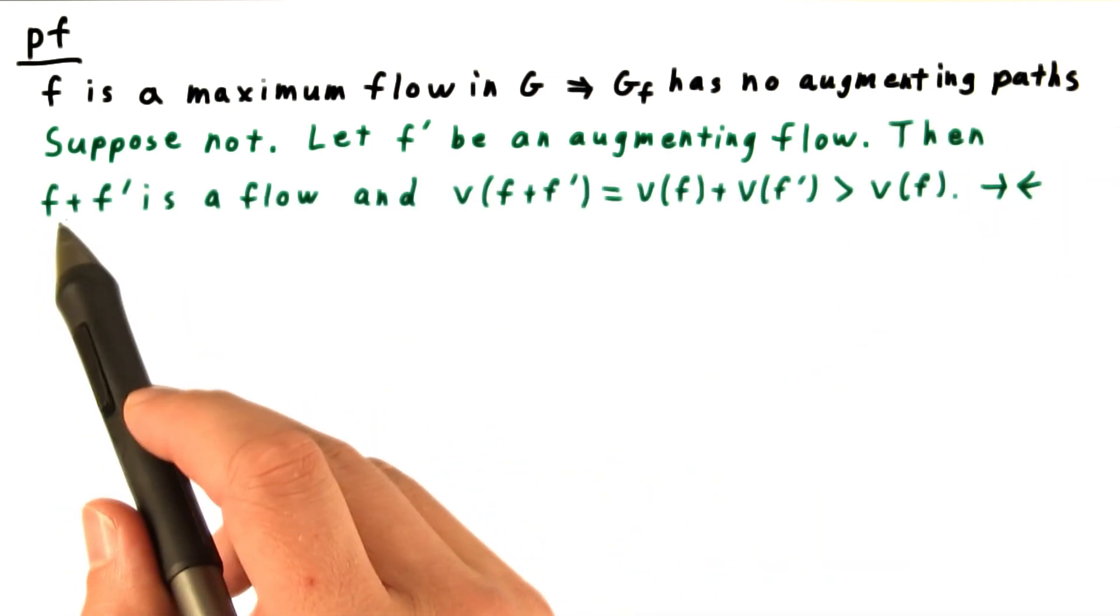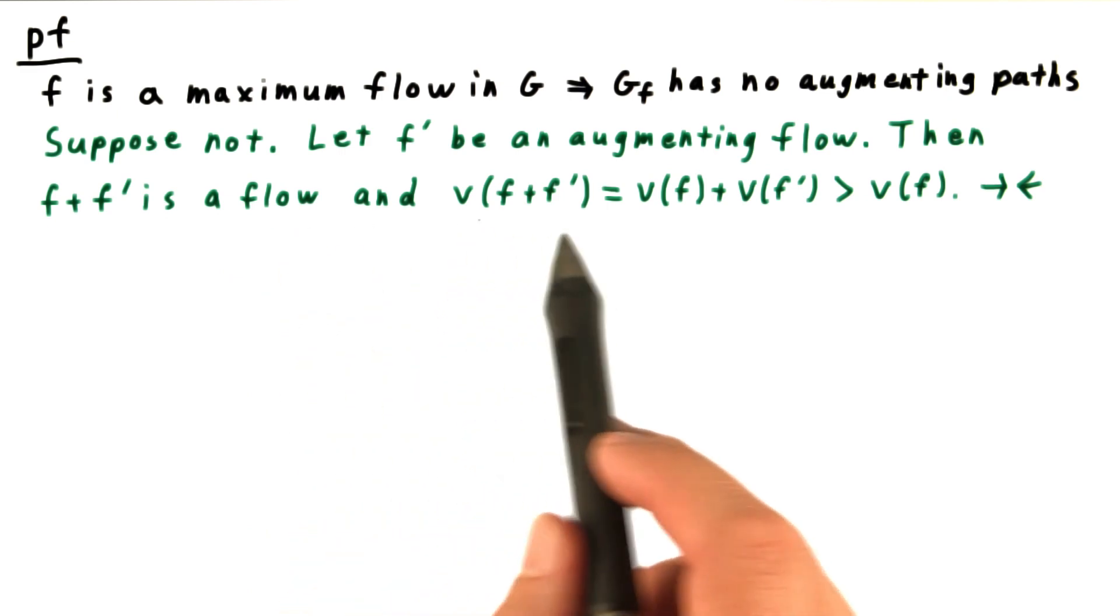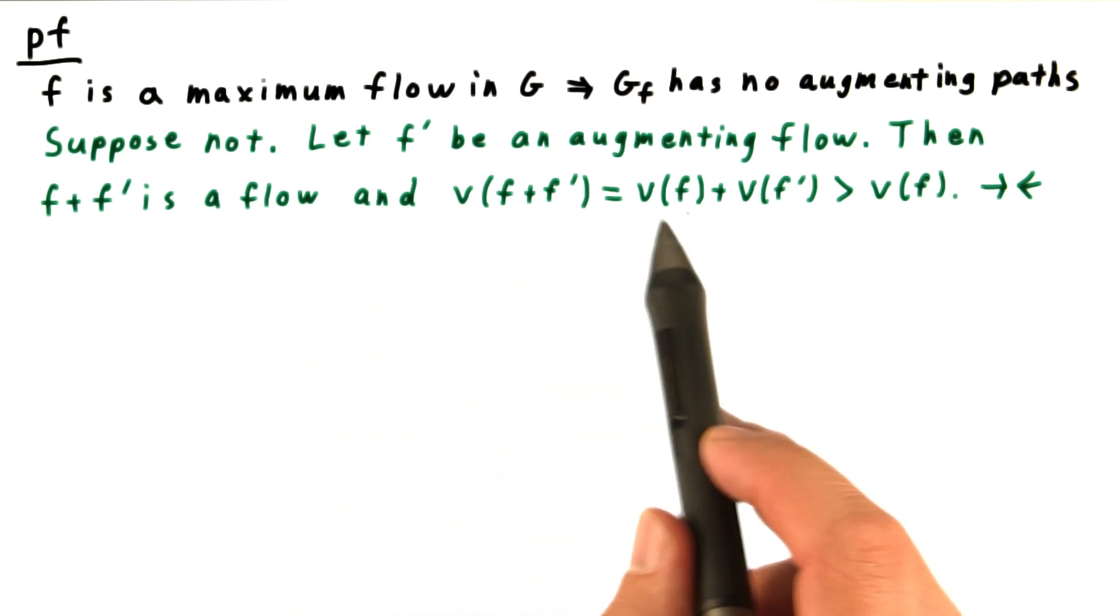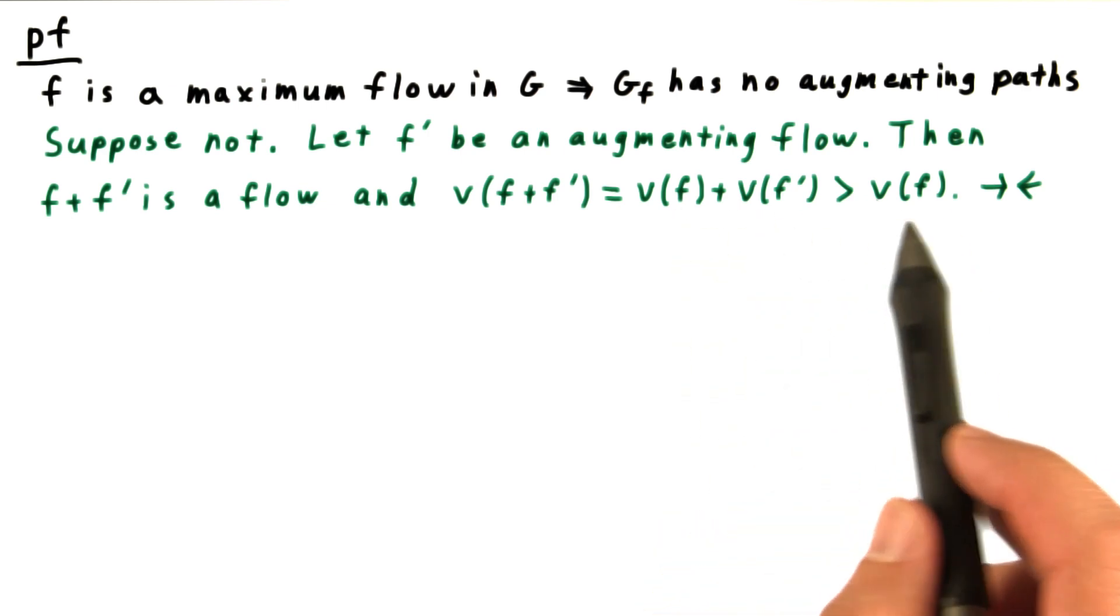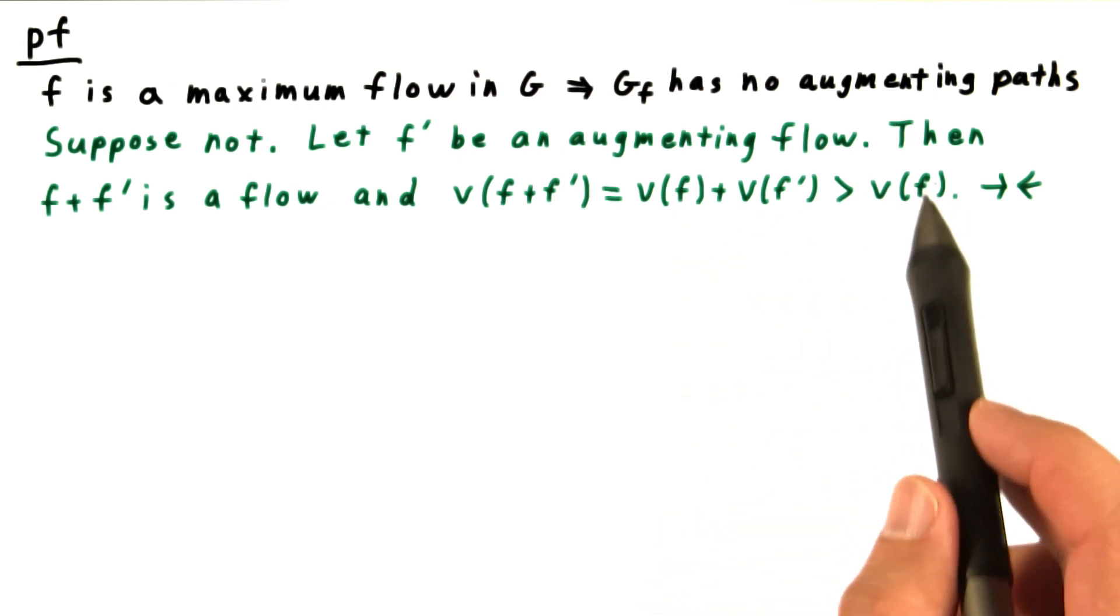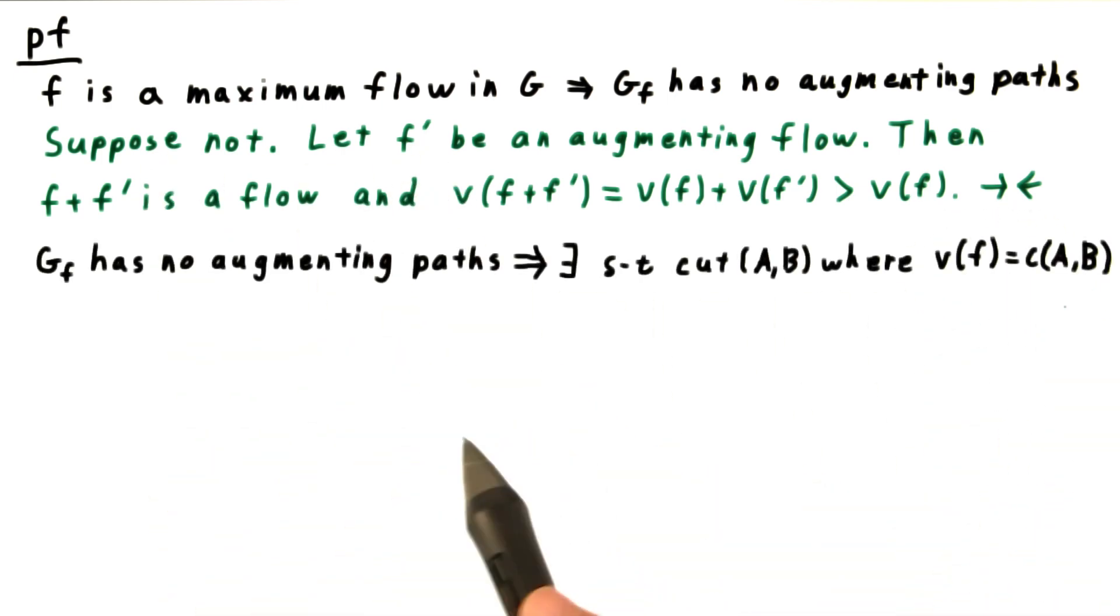Then we can augment F by F prime. And as we've argued, this will be a flow. And the value of the flow will be the sum of the values of the individual flows, which must be strictly greater than the value of F. But we assumed it was a maximum, so that creates a contradiction.